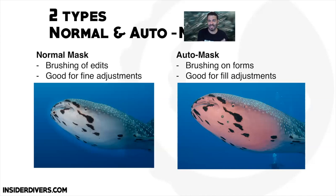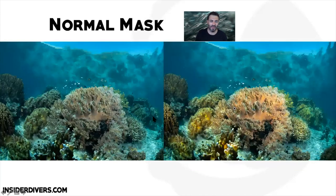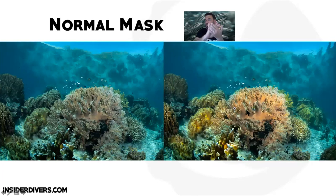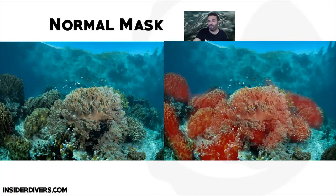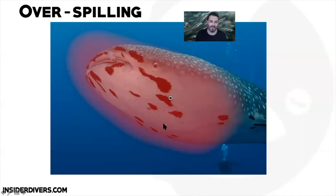There are two types of masks: the normal one and the Auto Mask. The normal mask is as I just explained — brush at 50/50 and paint into your picture. Here I made it extreme, but you can see the coral blocks have a bit more brightness, and the center one I brushed more so it gets more brightness. If you click on mask you can see where you've painted more and where less. What happens very often — even with top photographers — is the mask spilling: you try to make the whale shark brighter but you spill over into the outside, which is really noticeable.